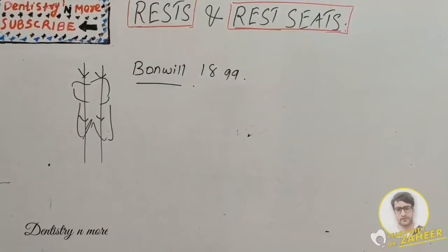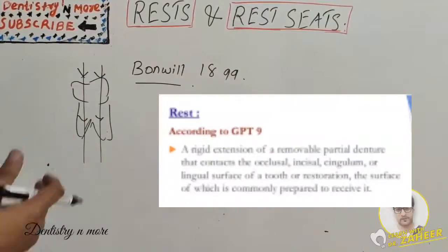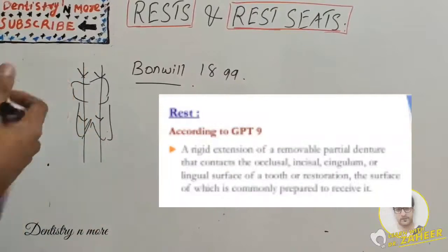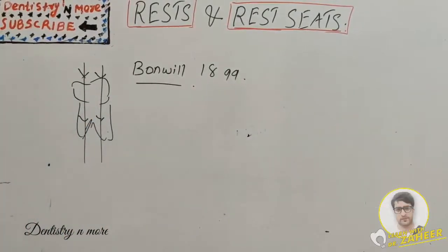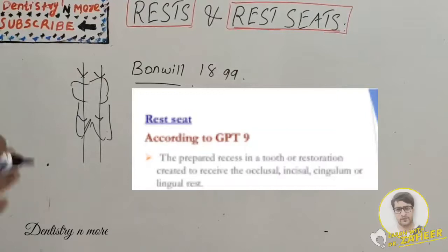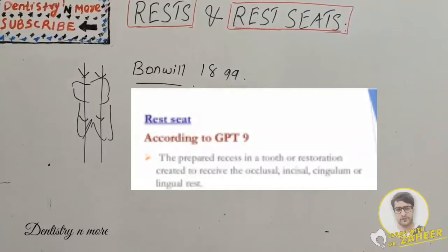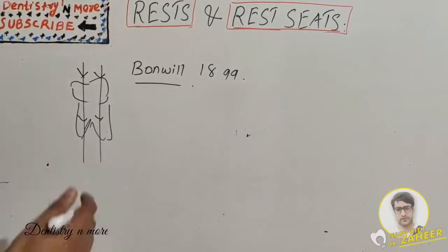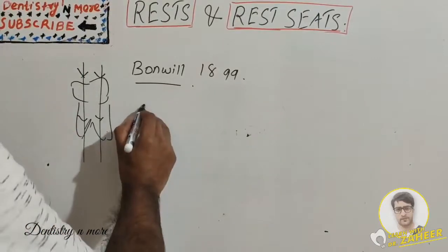As per the definition given by GPT, a rest is a rigid extension of an RPD that contacts the occlusal, incisal, cingulum, or lingual surface of a tooth or restoration, the surface of which is commonly prepared to receive it. A rest seat is a prepared recess in a tooth or restoration created to receive the occlusal, incisal, cingulum, or lingual rest.